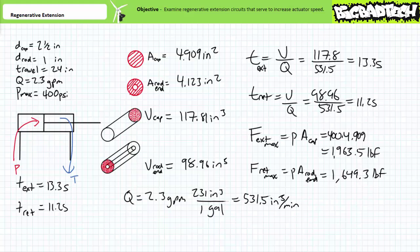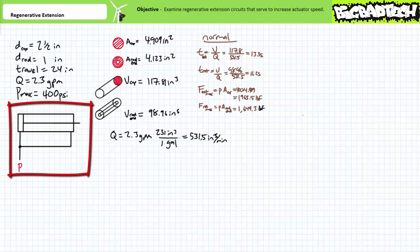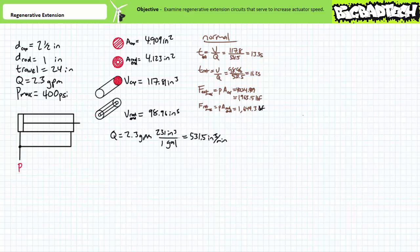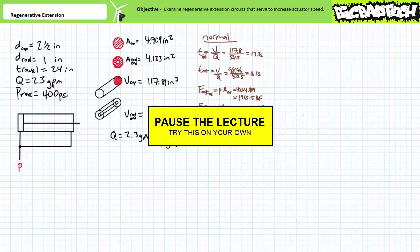During normal extension, the cap end of a double-acting cylinder is hooked to pressurized flow and the rod end is dumped to tank. Consider however a regenerative extension circuit where both ports of a fully retracted double-acting cylinder are hooked to pressurized flow. Given equal pressure on the cap and rod end, what does the cylinder do? Does it extend, retract, float freely, or lock in place? Pause the lecture and think about this — use Pascal's law and our previous calculations to support your conclusion.